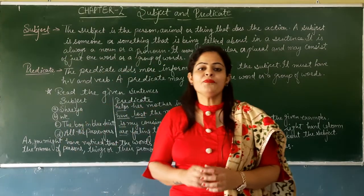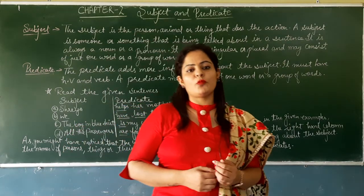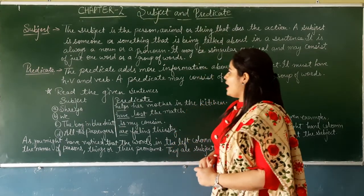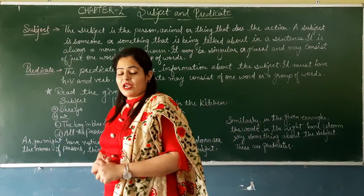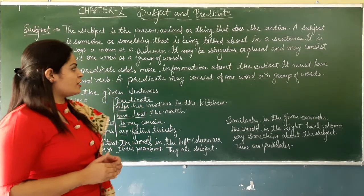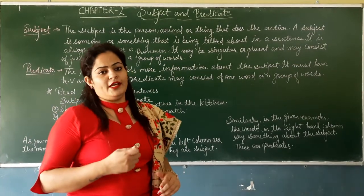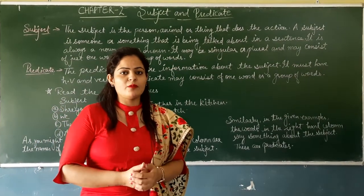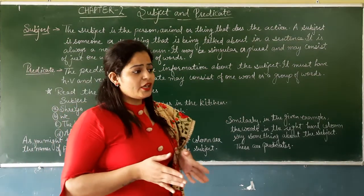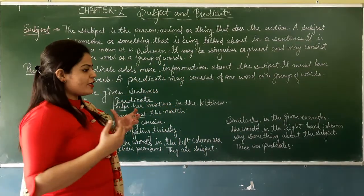Jo subject hai hamara, woh singular bhi ho sakti hai, plural bhi ho sakti hai — ek single word bhi ho sakta hai aur group of words bhi ho sakta hai. Next is predicate. The predicate adds more information about the subject. Predicate kya hota hai — jo humein subject ke baare mein batata hai, subject ke baare mein more information add karta hai. It must have a helping verb and verb. Jo predicate hota hai uske andar verb aur helping verb hona zaroori hai. A predicate may consist of one word or a group of words.